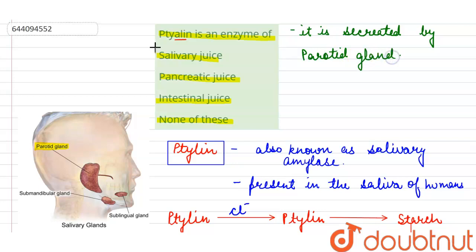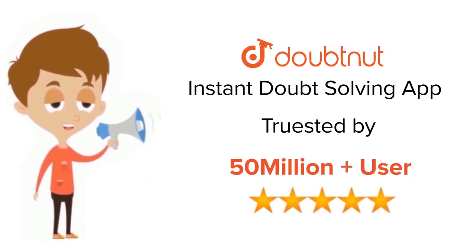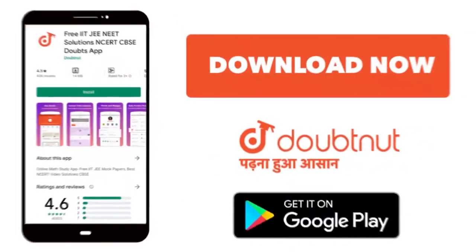As we know that ptyalin forms the constituent of saliva, the correct answer of this question will be salivary juice. Thank you students. For class 6 to 12, IIT-JEE and NEET level, trusted by more than 5 crore students, download Doubtnet app today.